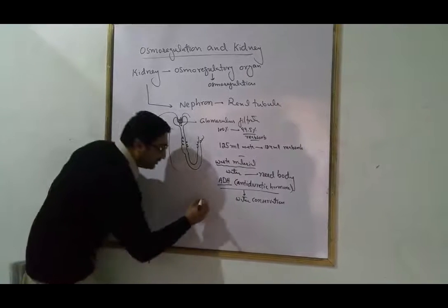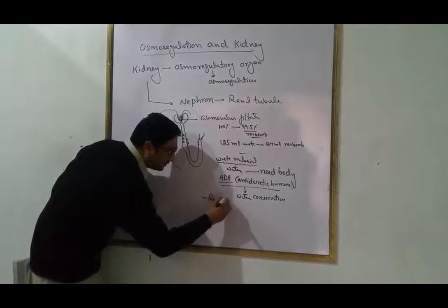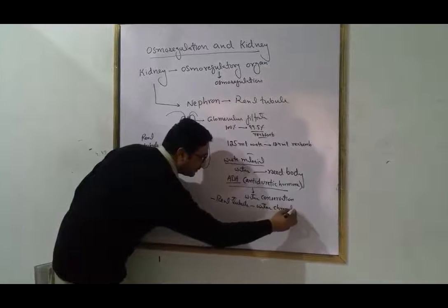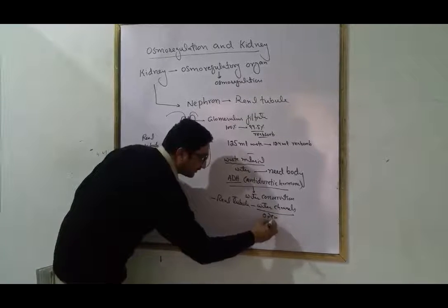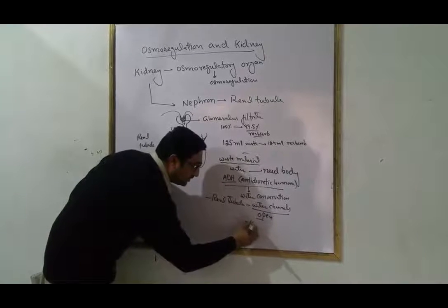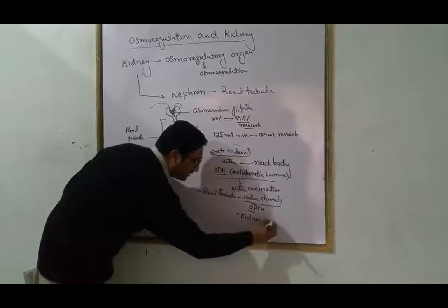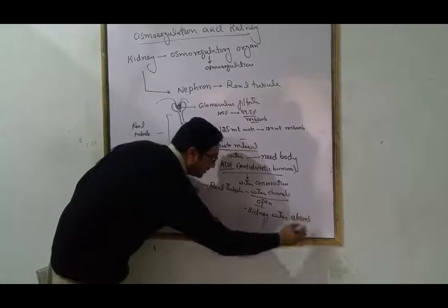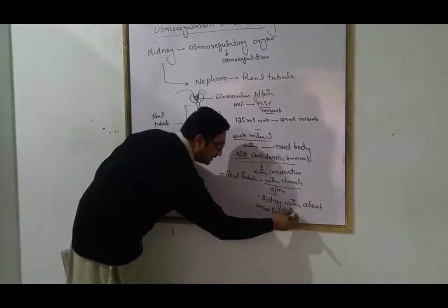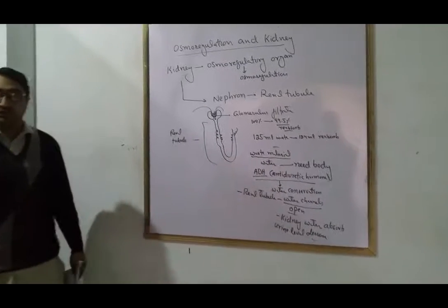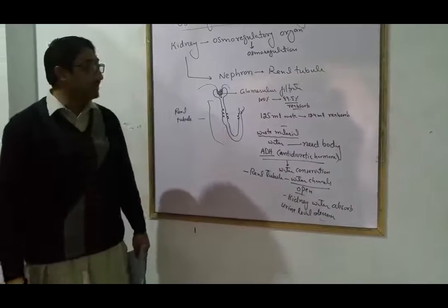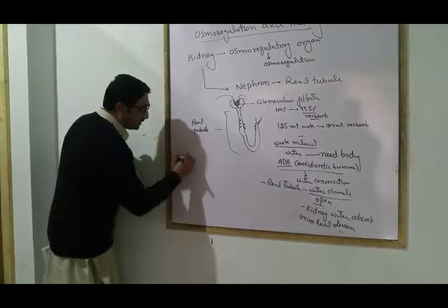When the urine level decreases, the water level in the body is higher. The kidney also absorbs sodium. So, the control of water and solute levels in the body is called Osmoregulation.